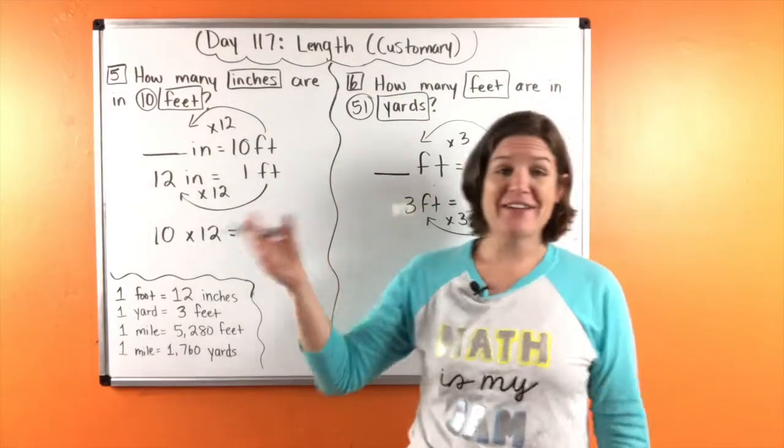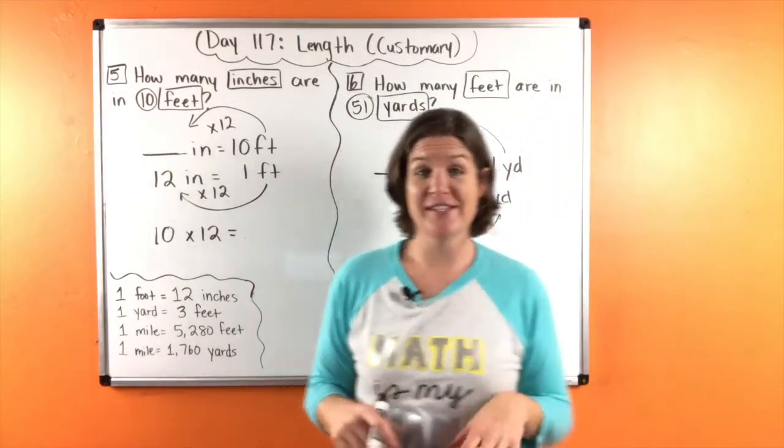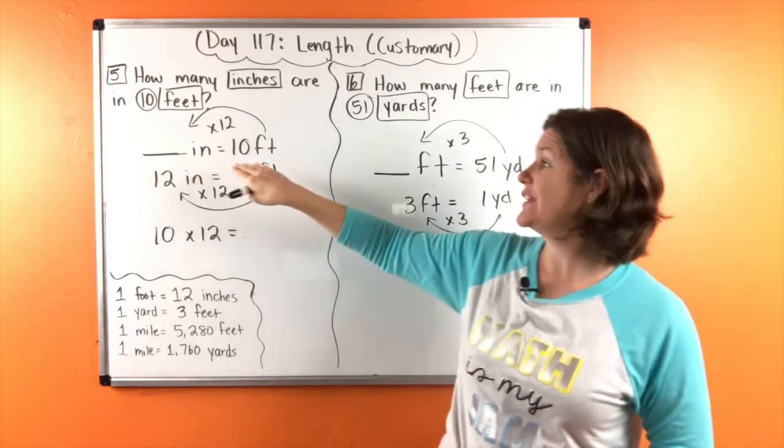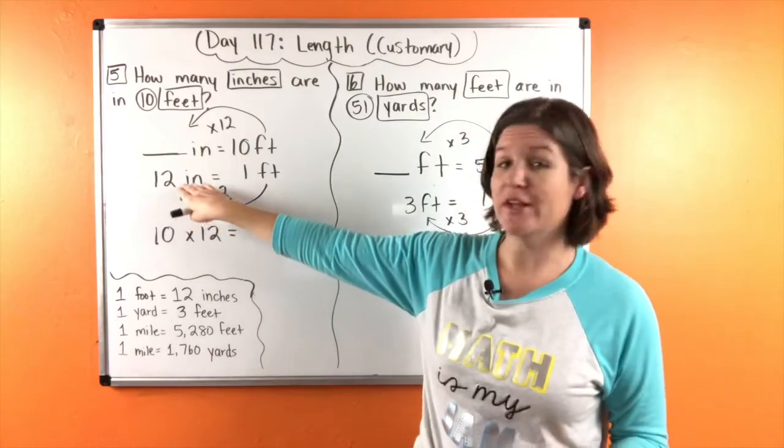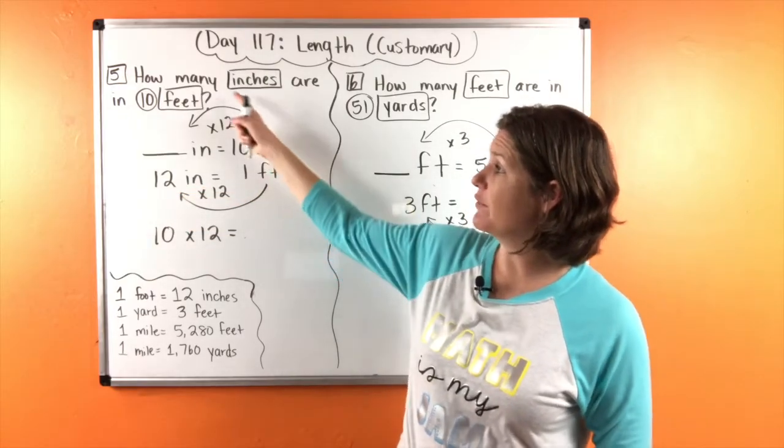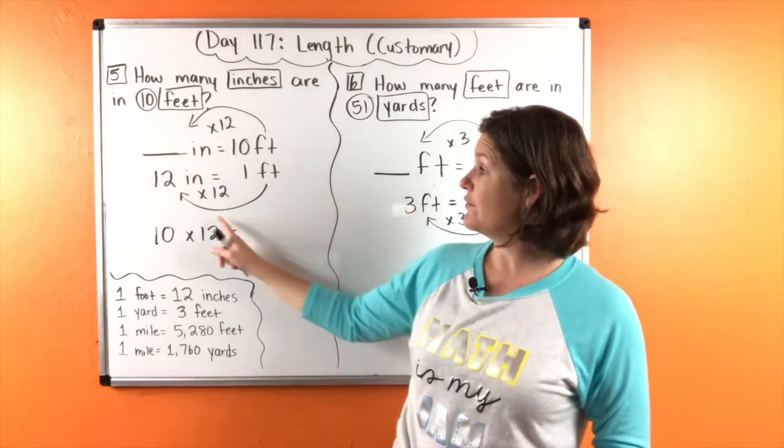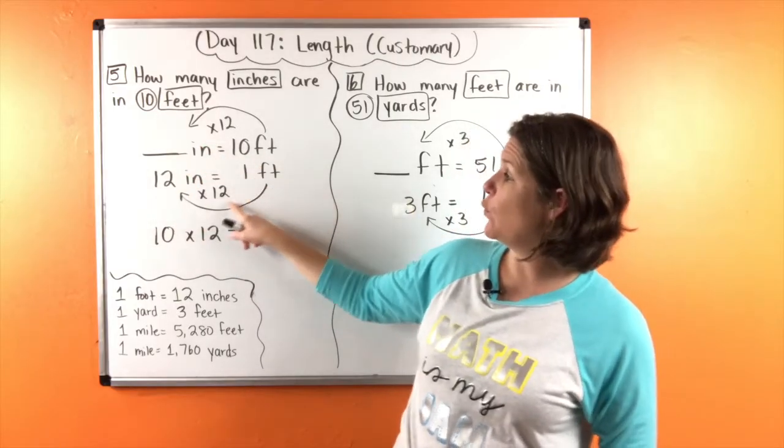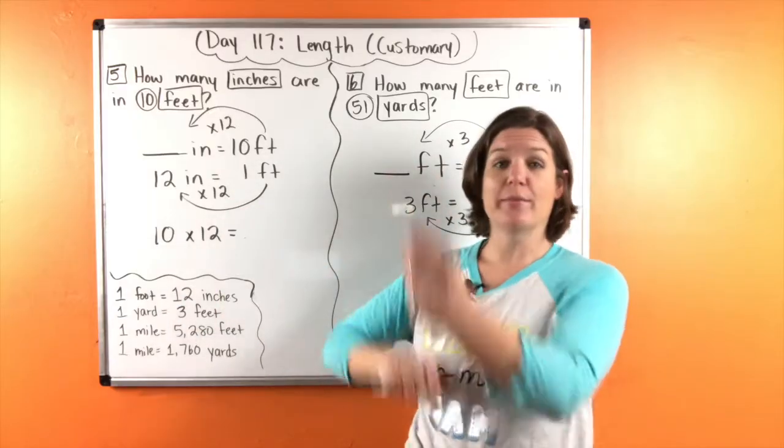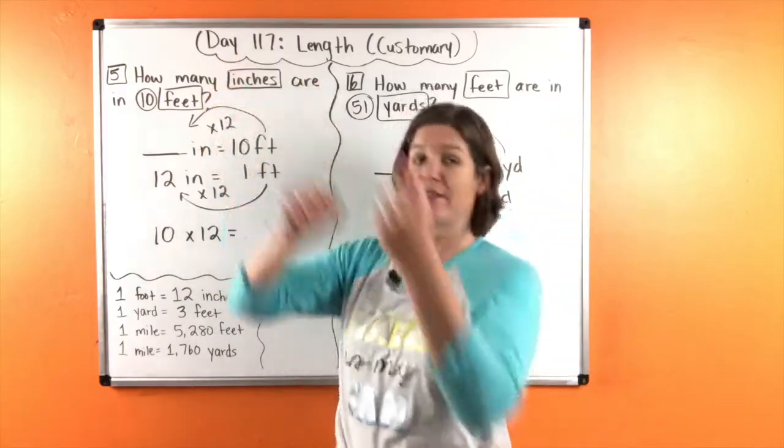All right, we're back with number five and number six. So let's see how you did. Number five says, how many inches are in 10 feet? So we know that 12 inches is in one foot. We're converting from feet to inches. And when we go from one to 12, we are multiplying by 12 on the bottom. So 12 on the top.